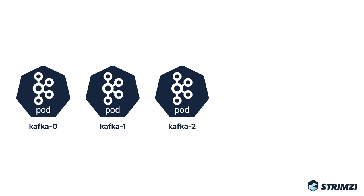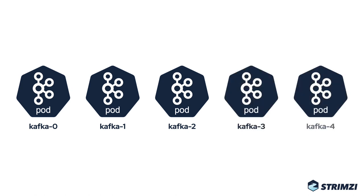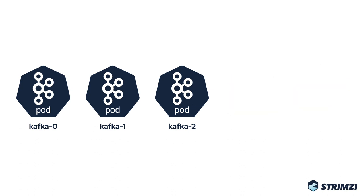And when you scale the cluster up, the StatefulSet will always give the new pods the names with the next index in the sequence — so pods Kafka 3 and Kafka 4. Similarly, when you scale down, always the last pods with the highest index will be removed. You cannot remove pods from the middle or from the beginning of the sequence.